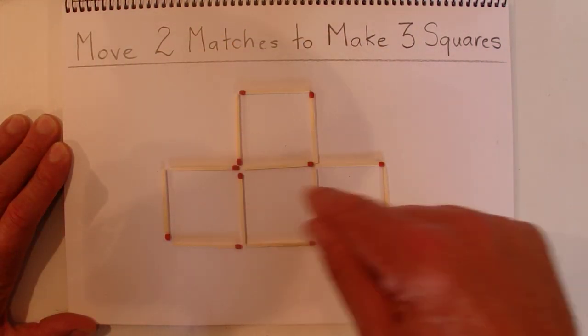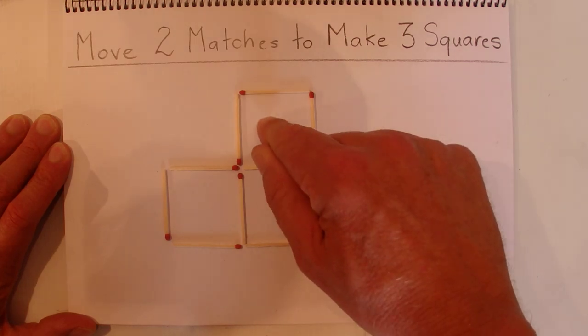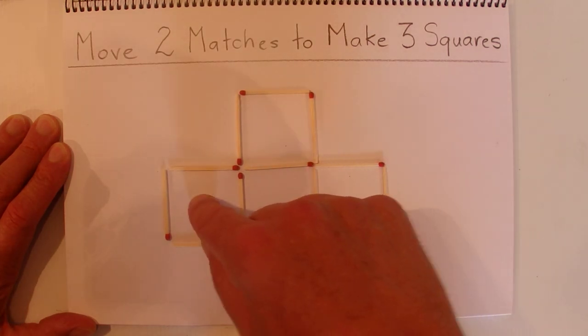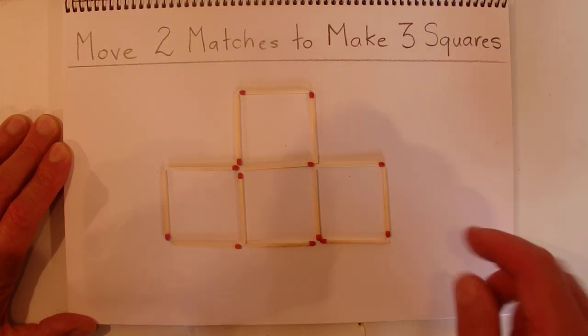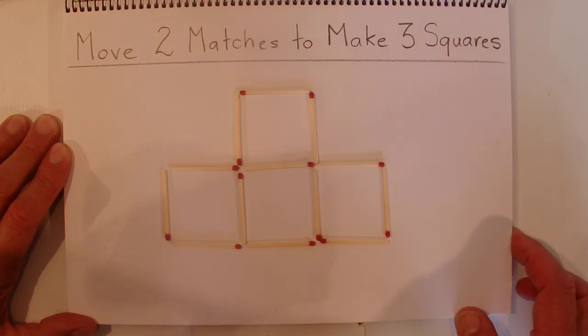It's based on this shape here which has got one, two, three, four squares made out of matchsticks, and that uses thirteen matchsticks. The object is to move two